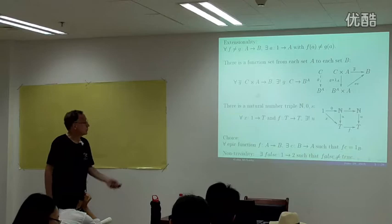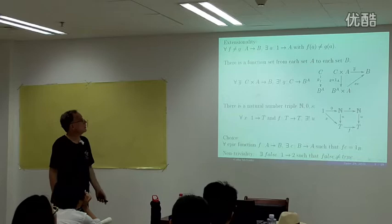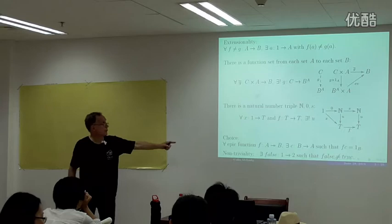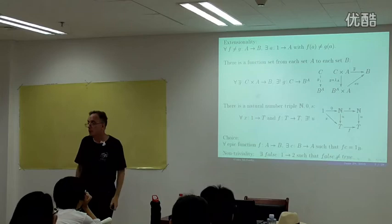We will have choice. The way I state the axioms, we also need this non-triviality. All the axioms except for this one are satisfied in a universe where there's only one set with only one element. But as soon as you say there's some set with more than one element, the other axioms kick in and blow it up to a whole universe of sets.